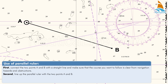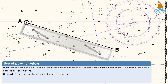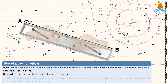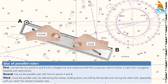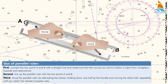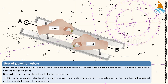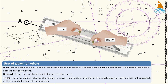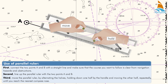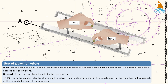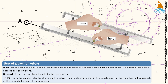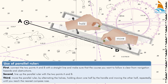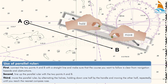Secondly, line up the parallel ruler with the two points A and B. Thirdly, move the parallel ruler by alternating the halves, holding down one half by the handle, and moving the other half repeatedly until you reach the nearest compass rose.